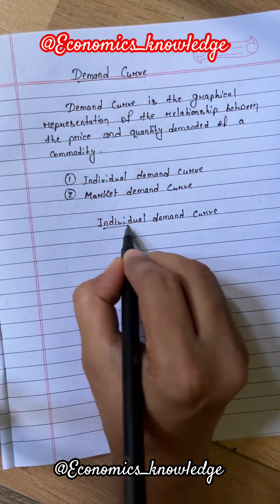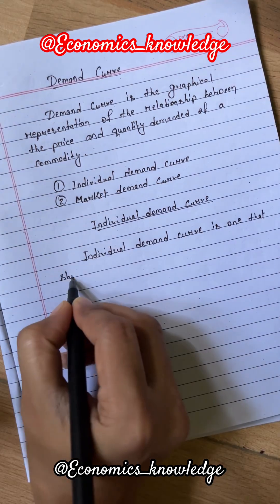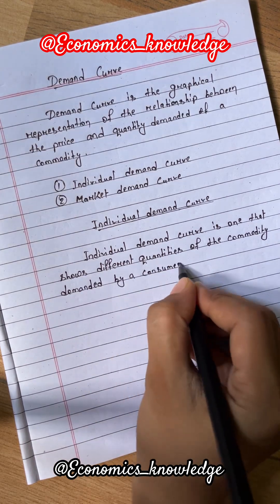Let's see first what is individual demand curve. Individual demand curve is one that shows different quantities of the commodity demanded by a consumer at different prices. It is the graphic representation of individual demand schedule.